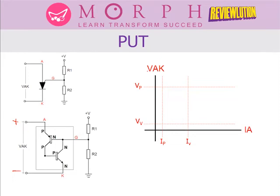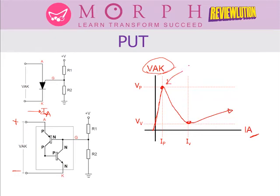The response curve of the PUT is similar to that of the UJT. As we increase the anode-to-cathode voltage, there is no significant increase in anode current until it reaches the peak point. After the peak, negative resistance occurs as current rises, until the anode current increases sharply. The graph shows a peak point voltage, peak point current, and a valley point — essentially a replica of the UJT characteristic curve.